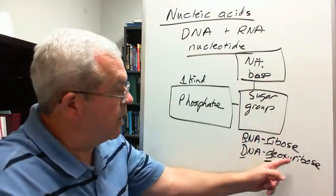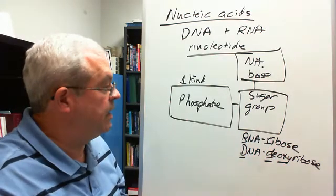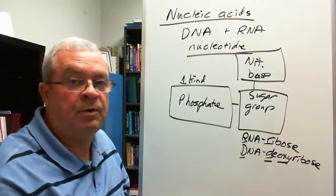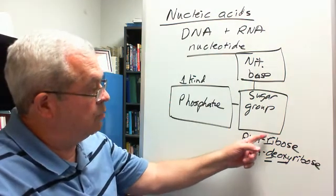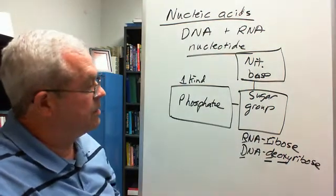Deoxyribose, that means ribose minus the oxygen. And so DNA, the DNA sugar group, deoxyribose, has one less oxygen atom than ribose. Ribose has one more oxygen atom than deoxyribose.